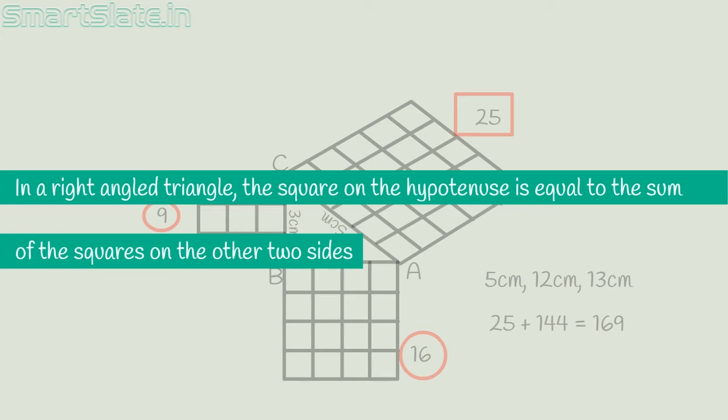This statement which gives the relationship between the areas of the sides of a right-angled triangle is called the Pythagorean theorem. This was named after the Greek mathematician who lived in 500 BC.